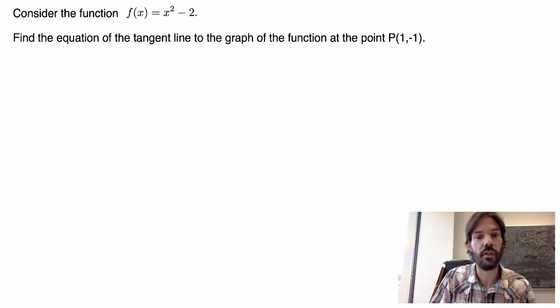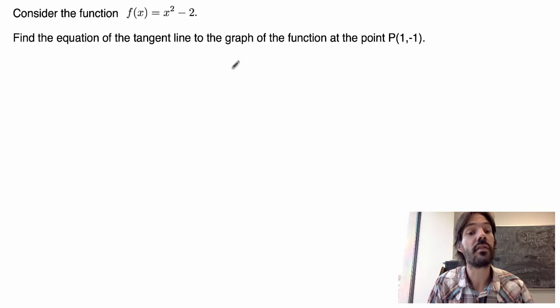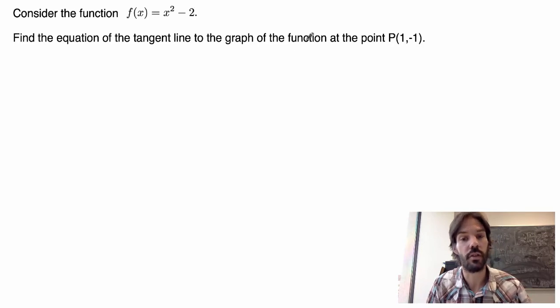So suppose I give you a function. In this case, I chose the function to be f(x) = x² - 2, and I ask you to find the equation of the tangent line to the graph of that function at a particular point, which of course must lie on the graph of the function, so my point here I chose to be (1, -1).